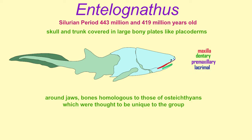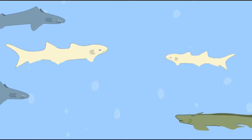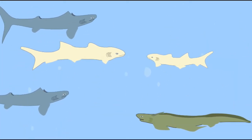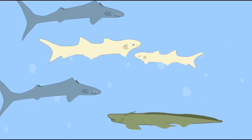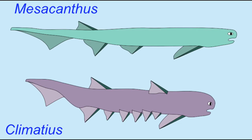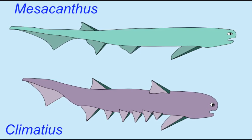Here, not only is a relationship demonstrated, but varying degrees, with some placoderms being more closely related to later fish than others, and thus being transitional forms. Cartilaginous fish and acanthodians are intermediate between the most primitive jawed fish, the placoderms, and the bony jawed fish, the osteichthians.